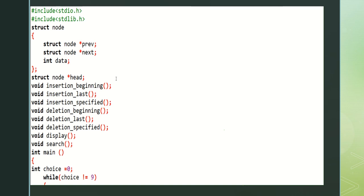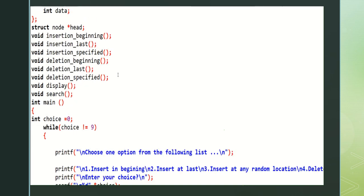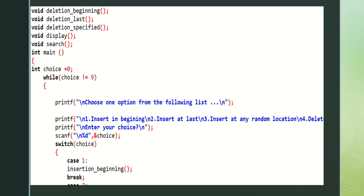Now we are going to perform the operations. Int main, int choice. Here the user has some choices. While loop — while choice is not equal to 9 — is used to iterate for a number of items or an infinite number of items. It executes up to choice equal to 9.